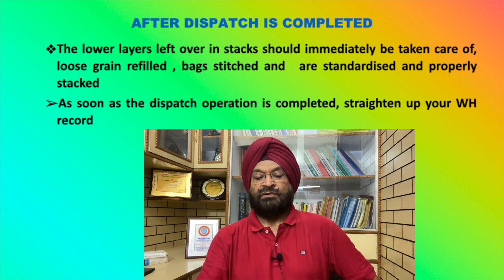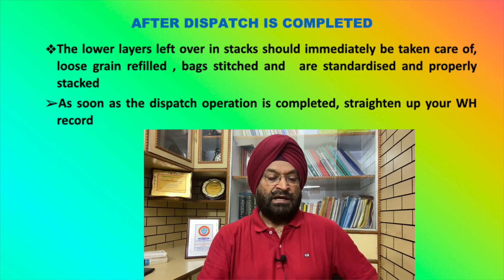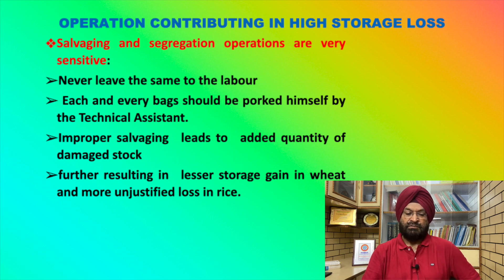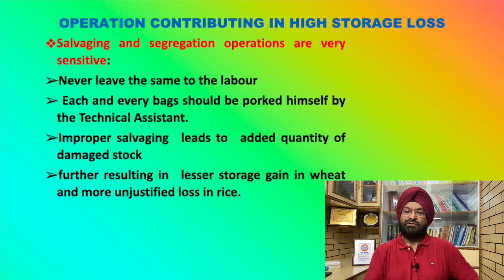After dispatch operations are completed, the lower layer left over in the stack should immediately be taken care of — loose grain refilled, bags stitched, and the stack restandardized and properly re-stacked. Straighten up your warehouse records immediately. One operation that contributes a lot to storage losses in both rice and wheat is salvaging and segregation — it is a very sensitive operation. Never leave it to the laborers; each and every bag should be poured by the technical assistant himself while segregating or re-stacking or de-stacking. Improper salvaging leads to added quantity of damaged stock, resulting in unjust storage loss in rice and lesser gain in wheat.